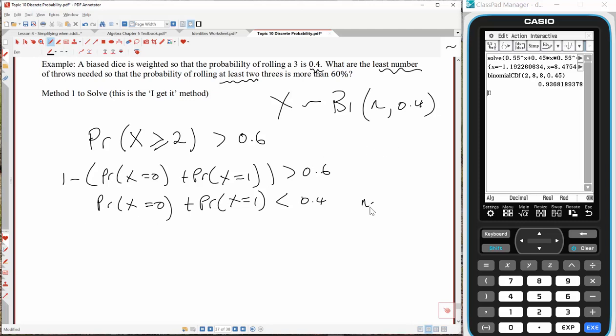Now what we're going to do is write our statements up for this using the formula. So we've got n choose 0, success is 0.4 to the 0, fail is 0.6 to the n, plus n choose 1, 0.4 to the 1, 0.6 to the n minus 1, less than 0.4. Let's clean up shop, so 0.6 to the n plus n times 0.4 times 0.6 to the n minus 1, less than 0.4.